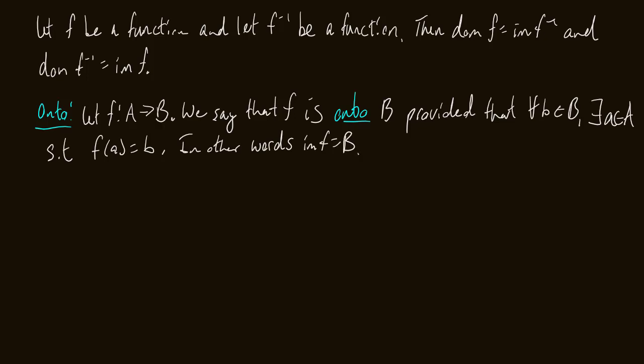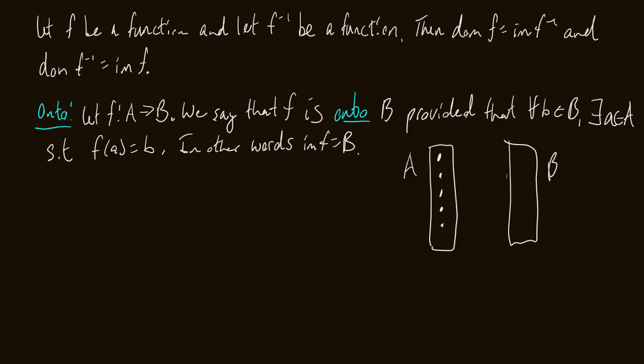Remember from last video — the image doesn't necessarily need to equal B, just be a subset of B. Well, if f is onto B, that means the image equals B. So for all elements of B, we have some element from A that gets mapped to b — we cover the entirety of the set B. Let's draw a picture: here's A and here's B, and all of B gets covered — every element of B has at least one element of A mapped to it.